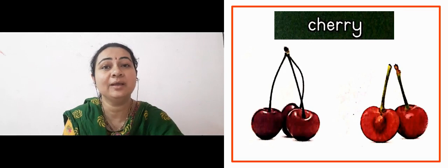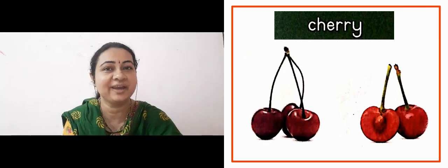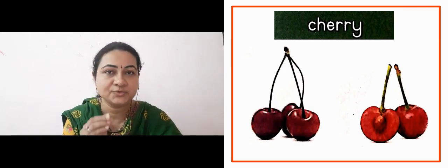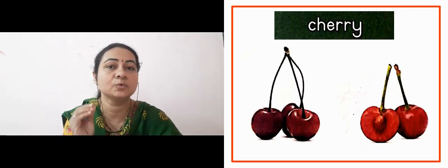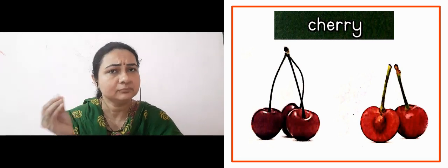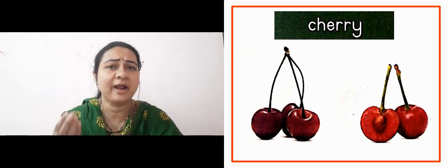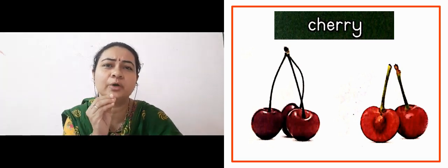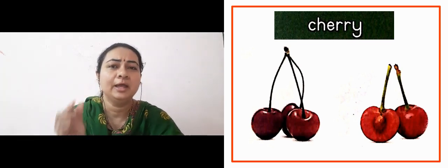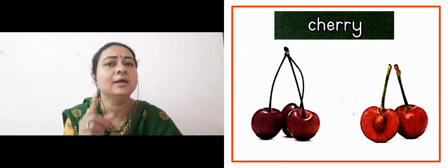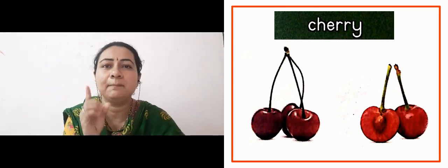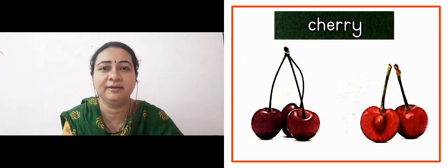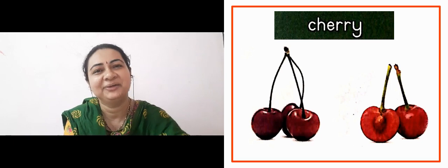The next lady is showing us cherry. Cherry is a fruit we eat, but it is also dried a little with some sugar added. The cherry you see most often is on pastries and cakes, right?